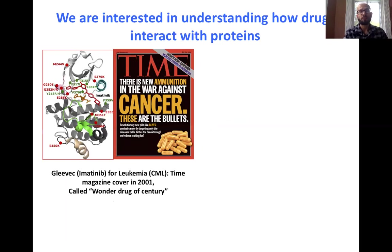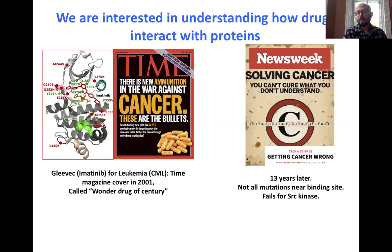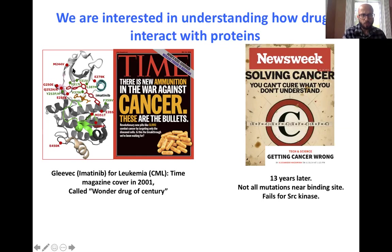The type of problems we would like to solve include how drugs dissociate from proteins. This is a drug called Gleevec, which made it to the cover of Time magazine in 2001. Only 13 years later the same drug made it to the cover of Newsweek with the title 'Getting Cancer Wrong.' When it came in 2001 it was a wonder drug — people who would get certain forms of leukemia saw their mortality rate improve by tenfold. But 13 years later these people were again getting cancer, and the protein had started to develop mutations which made the drug ineffective.